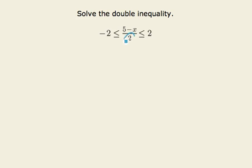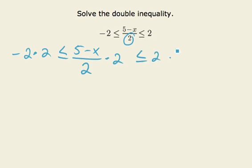I have a denominator. Let's get rid of the denominator as our first step. So I'm going to multiply all three sides by positive two. Multiplying by a positive two does not change the direction of the inequalities, because positive two is positive. So here I've multiplied each of my three pieces by that positive two.